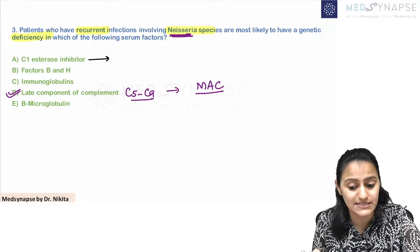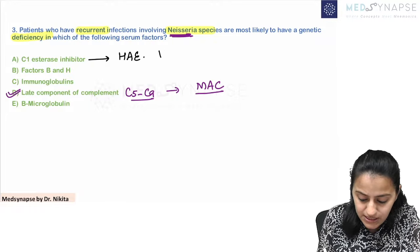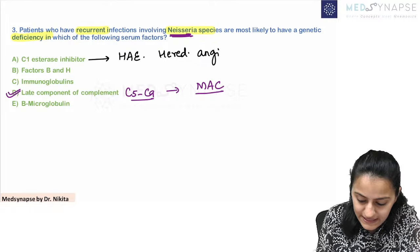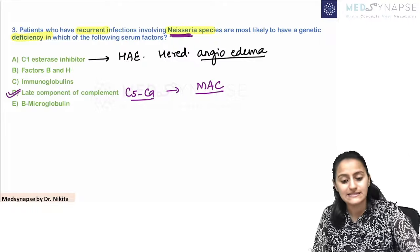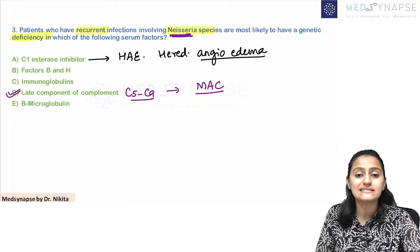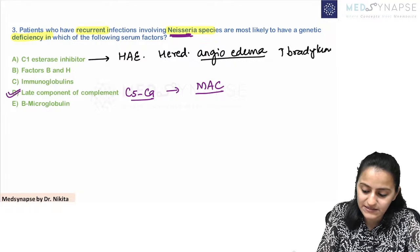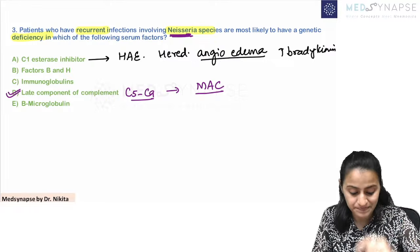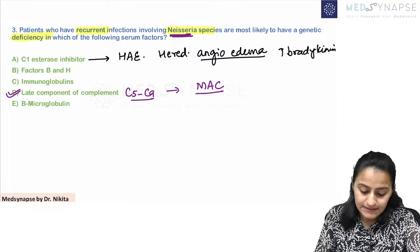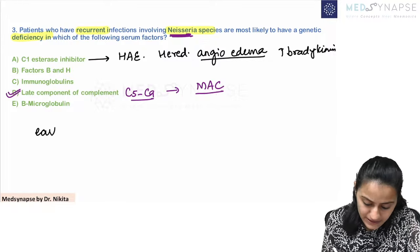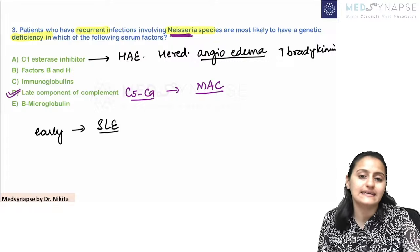Late complement deficiency — C5 to C9 — is your late complement deficiency. Also remember: deficiency of C1 esterase inhibitor (not C1 esterase itself) leads to hereditary angioedema, because of increased levels of bradykinin.